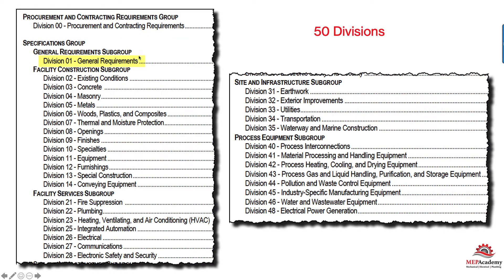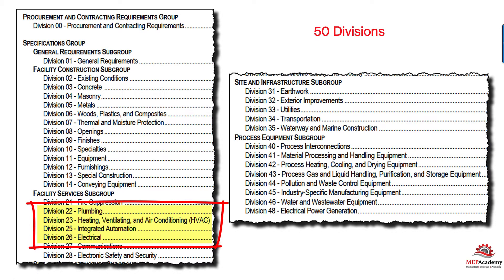We'll go over some of these later, but you'll see the different trades listed. If you do Concrete, that's Division 03. If you do Masonry work, that's Division 04. And then we get down to our MEP trades. Division 22 is Plumbing — always Division 22. Division 23 is Heating, Ventilating and Air Conditioning, known as HVAC — always Division 23. And Division 26 is Electrical.